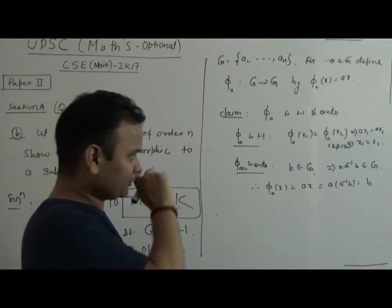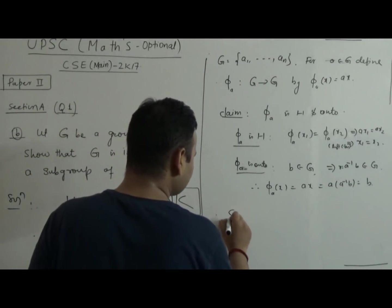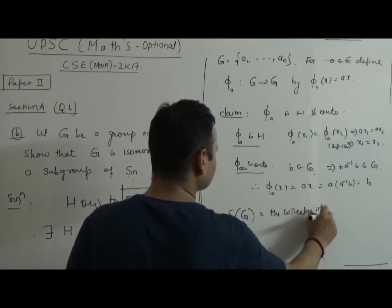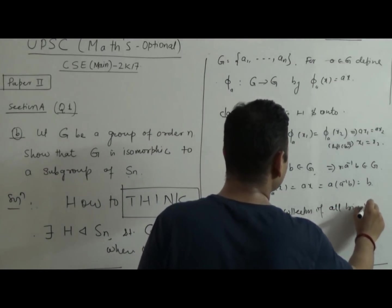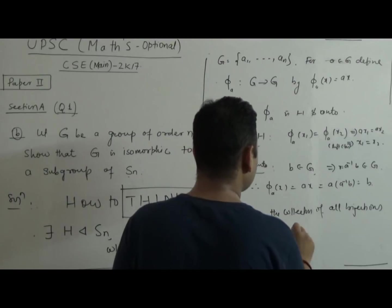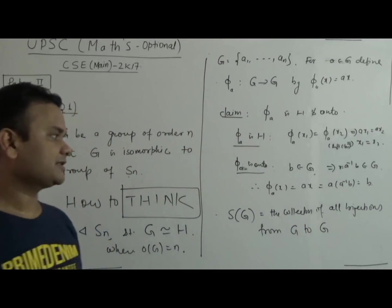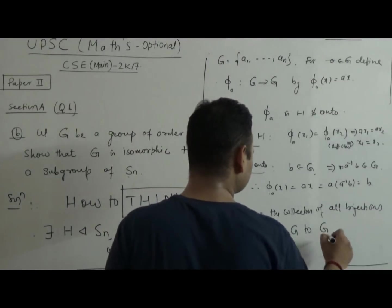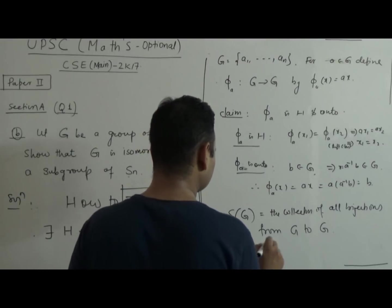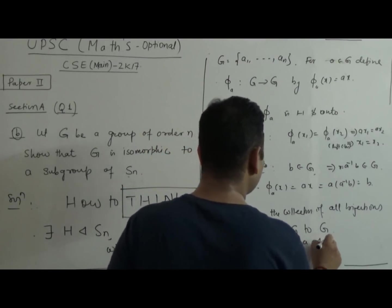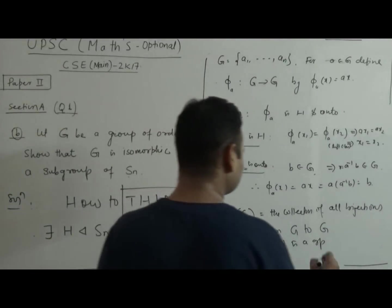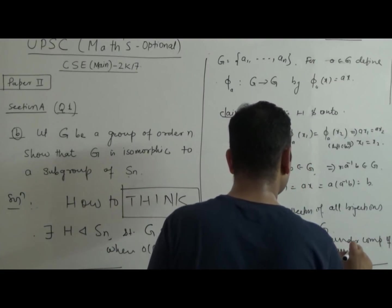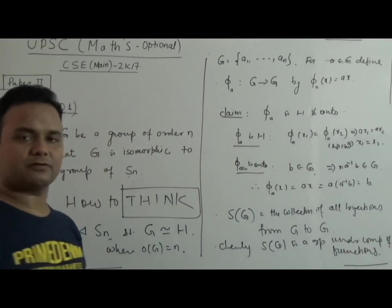Now consider the set S_G, which is nothing but the collection of all bijections from G to G. Clearly, S_G is a group under the operation of composition of functions. I claim S_G is a group under composition of functions. This can be verified — I leave it as an exercise. Please prove this. But in exam form, you don't have to prove it; you just use this reasoning.